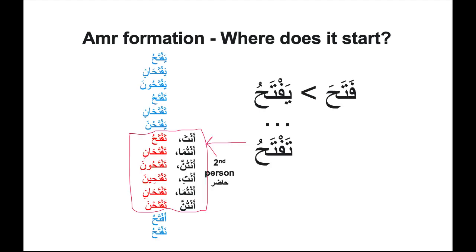The next important thing you need to know is amr formation is made on second person hazir verbs, and it starts from the mudari. Because we will be making the request or command — telling somebody, do it — it has to be someone in front of me. Please think about the dummy chart. Fataha bharb is broken down into 14 conjugations. From yaftahu, we go downward, looking for the second person forms in order to make amr formation.